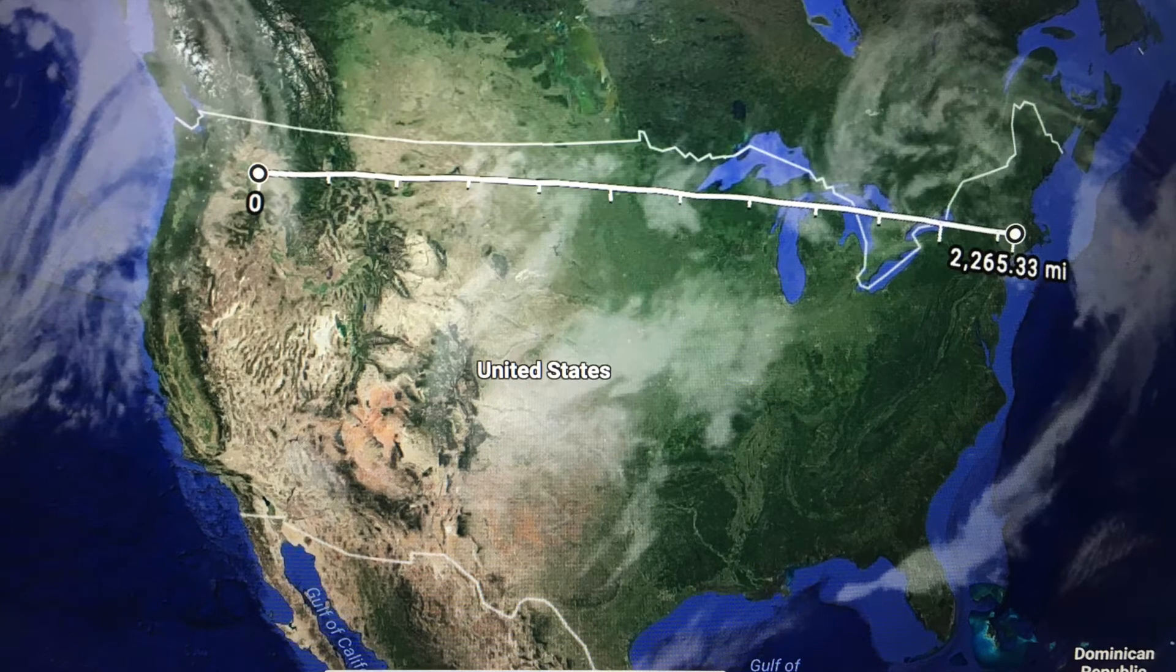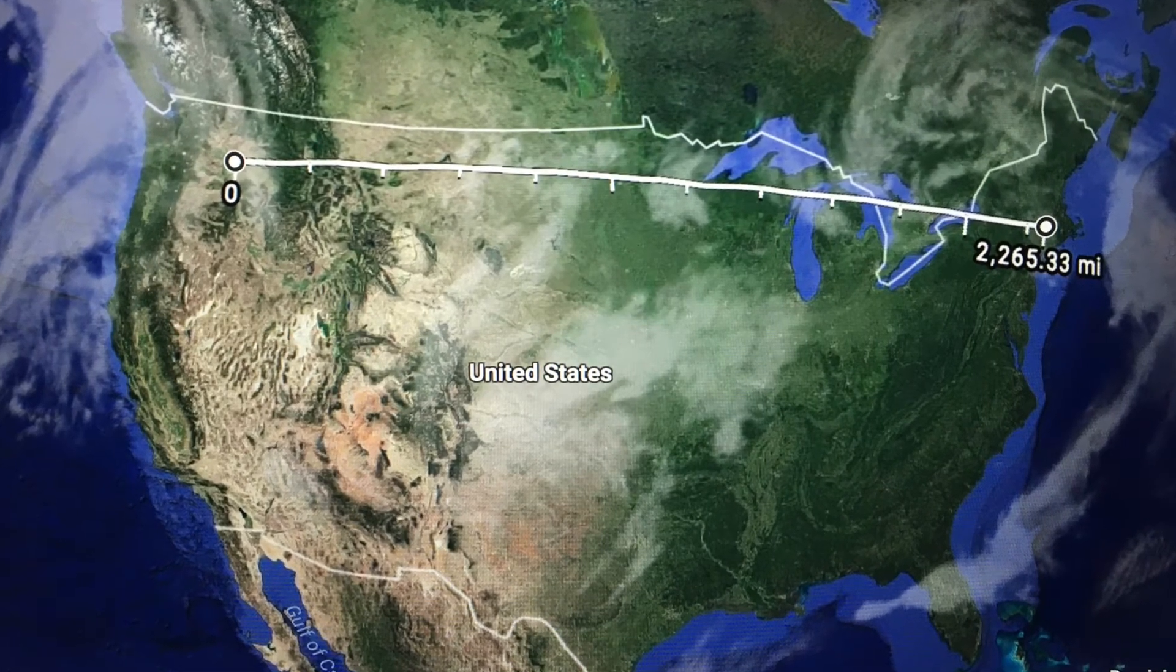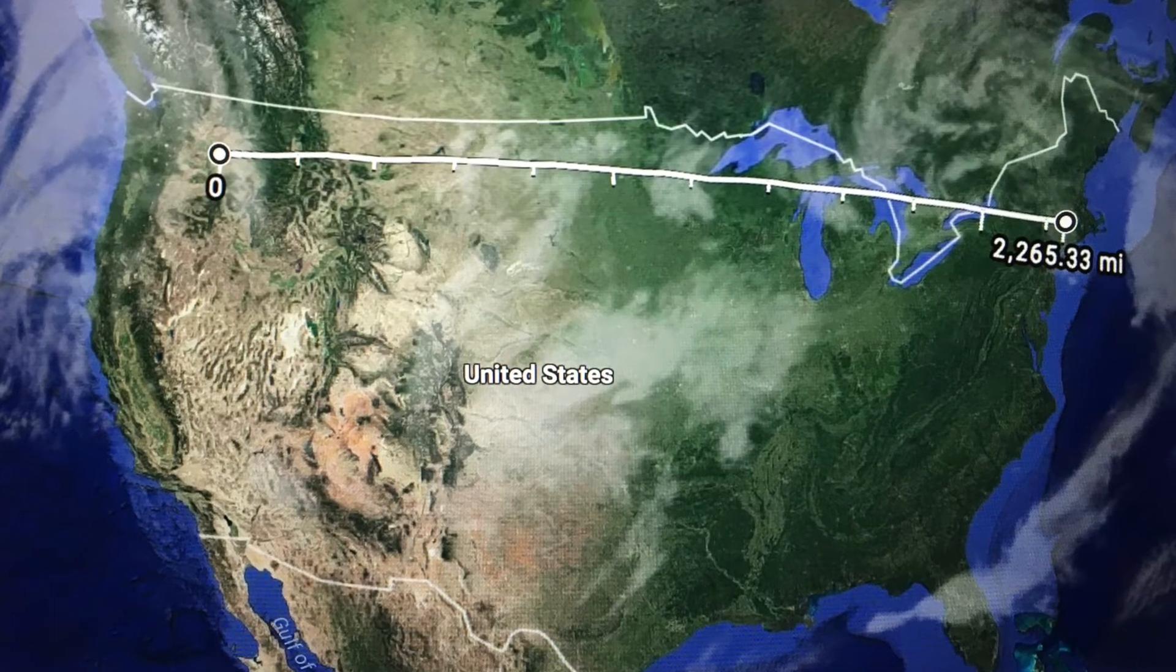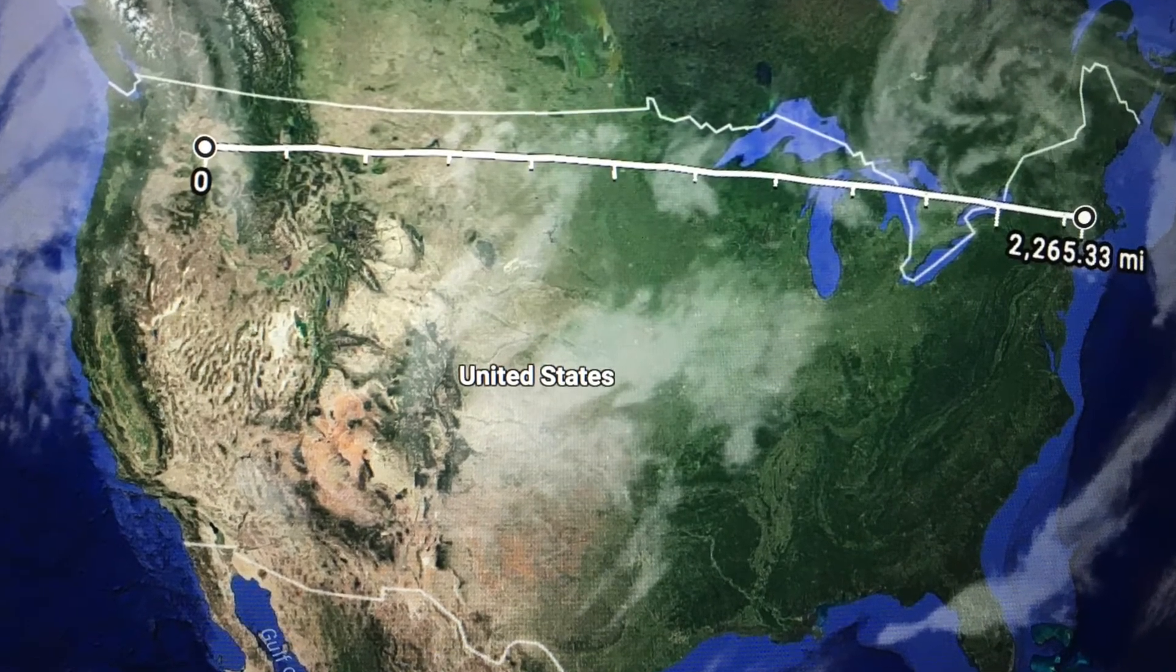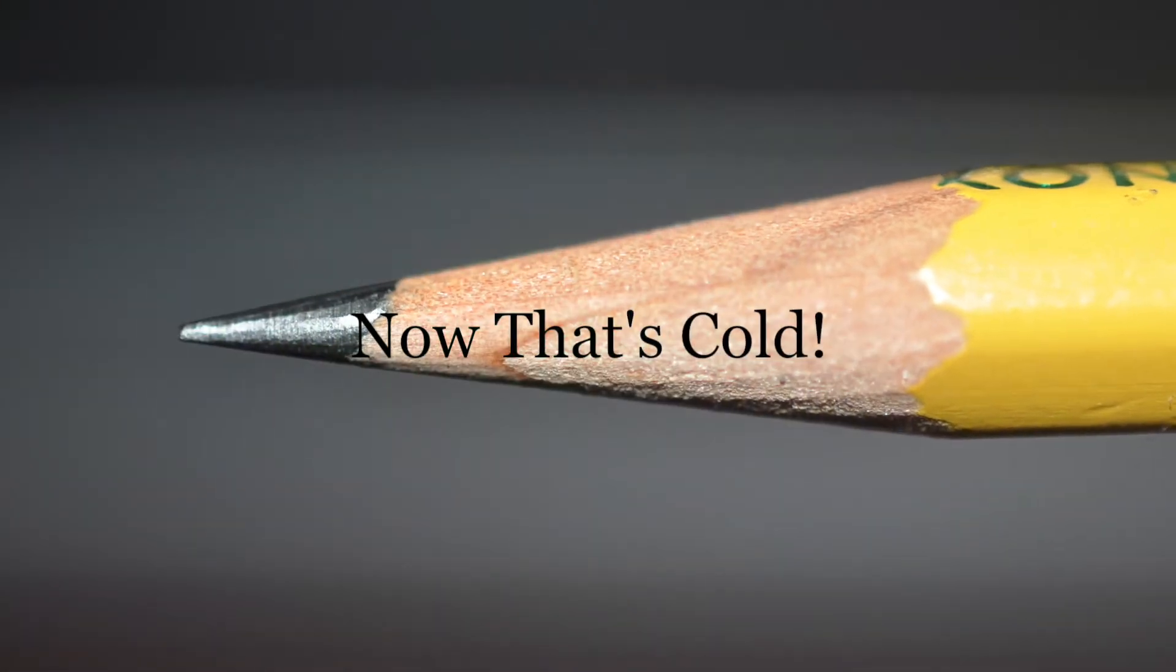So that's a really hard number to process. So consider this analogy. If Pullman, Washington represents absolute zero, and Boston, Massachusetts represents room temperature, the temperatures that we're cooling our atoms to in our lab are the width of a pencil tip. Now, that's pretty cold.